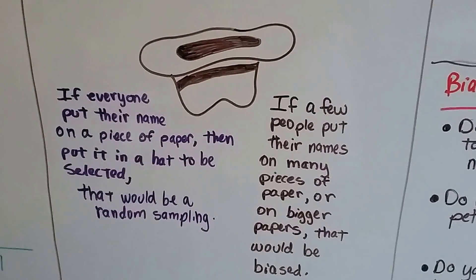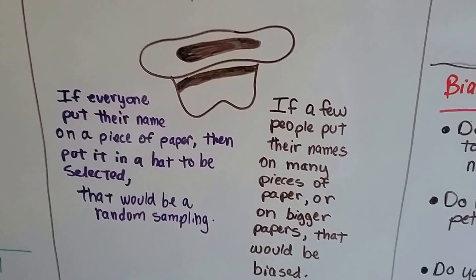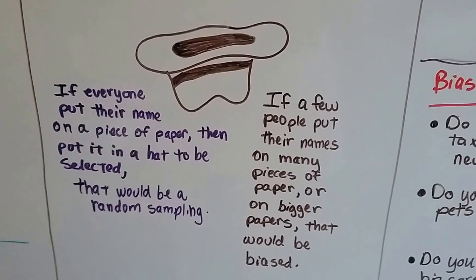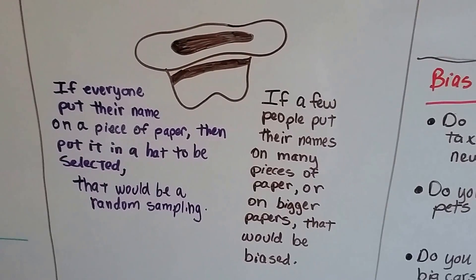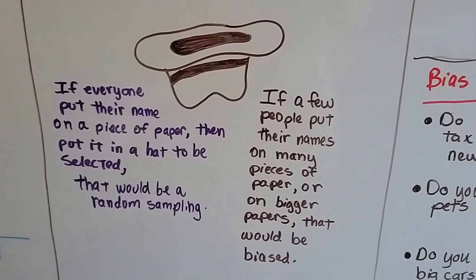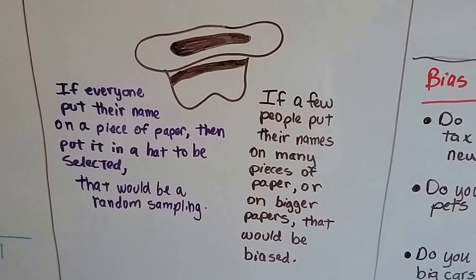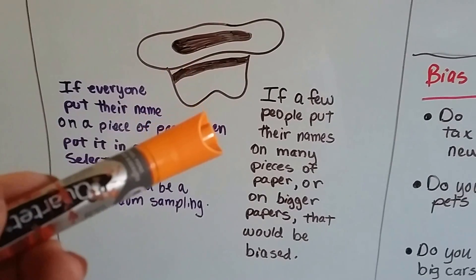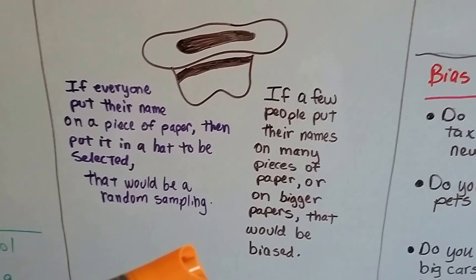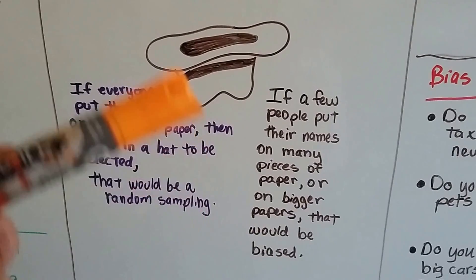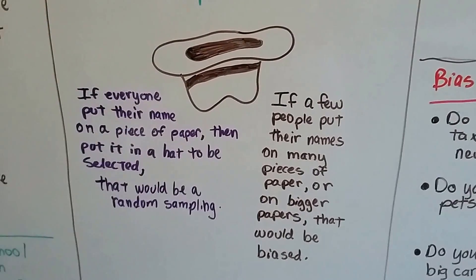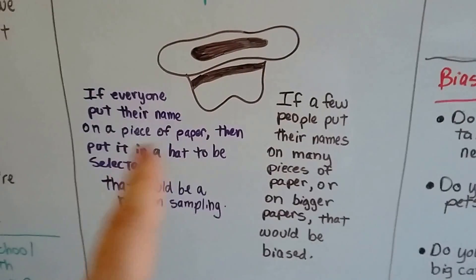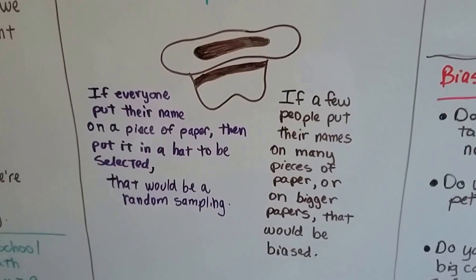If everyone put their name on a piece of paper and then put it in a hat to be selected, that would be random sampling — you wouldn't know whose name was going to be selected. But if a few people put their names on many pieces of paper or on bigger pieces of paper that would be easier to grab, that would be biased. It wouldn't be fair to everybody's name, would it?